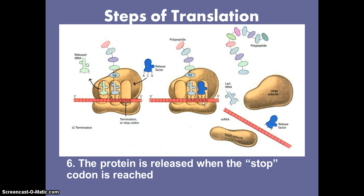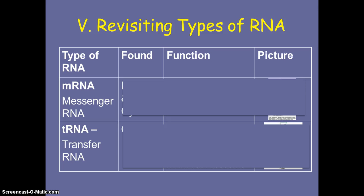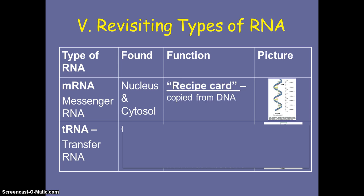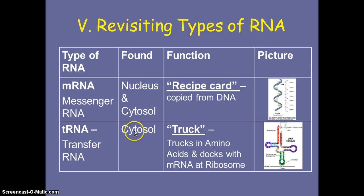You're going to be practicing this whole process on paper next class. Let's revisit the types of RNA. The flat kind — the middleman that's part of both transcription and translation — is mRNA. tRNA is not found in the nucleus; it's only involved in translation. It acts as a truck, trucking in amino acids, docking at the ribosome and matching up through base pairing rules with the mRNA. Each different transfer RNA has a different amino acid.